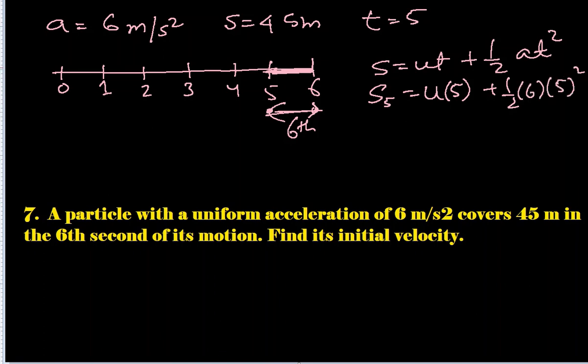And 5 squared. 2 and 6 can cancel out, so s₅ comes out to be 5u and 25 times 3 = 75. So 5u plus 75.